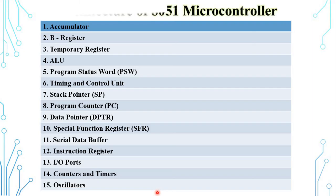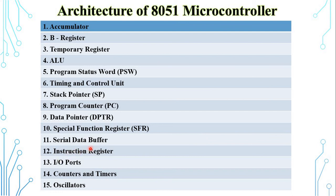The serial data buffer consists of two separate registers: a transmit buffer register, used to hold data for serial transmission, and a receiver buffer register, used to hold data for serial reception. The instruction register is an 8-bit register that is part of the ALU. When an instruction is fetched from memory, it is loaded into the instruction register, which then determines the operation to be performed in executing the instruction.